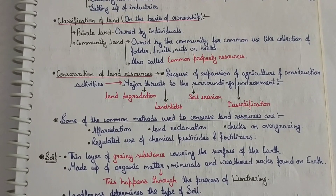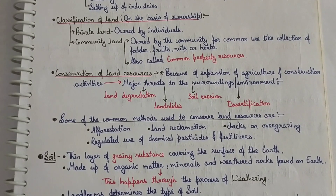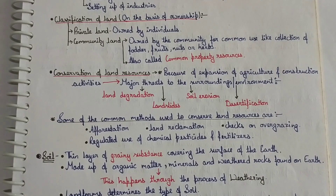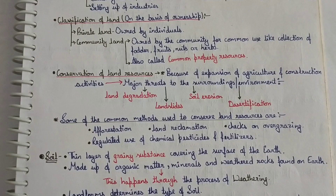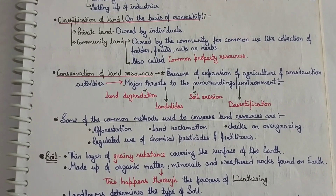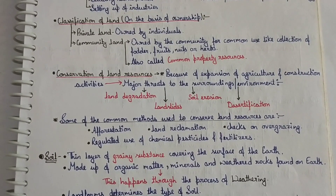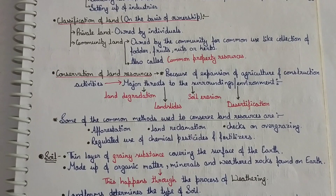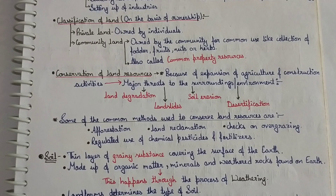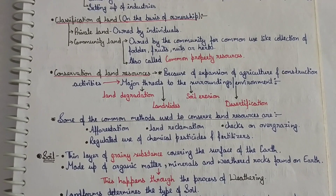Some common measures that can be adopted to conserve land resources are: first, afforestation — planting of trees; second, land reclamation, which means land improvement; third, checks on overgrazing — overgrazing activity should be regulated; and fourth, regulating the use of chemical pesticides and fertilizers to reduce soil damage.